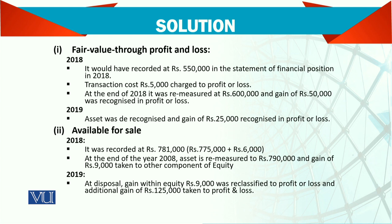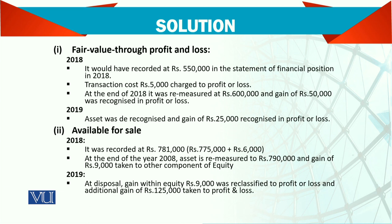This is the key difference between fair value through profit and loss and available for sale. For FVTPL, transaction costs go to profit and loss immediately, and all value changes go to profit and loss. For available for sale, transaction costs are added to the asset, value changes go to OCI (equity), and only upon disposal does everything get reclassified to profit and loss. Thank you very much.